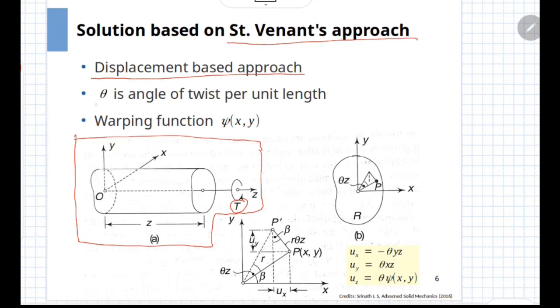One parameter in this approach is theta, which is angle of twist per unit length. If you take point O as a reference point and consider a cross-section at a distance z from this origin, this particular cross-section will have angle of twist given as theta multiplied by z. That is what is meant by angle of twist per unit length.